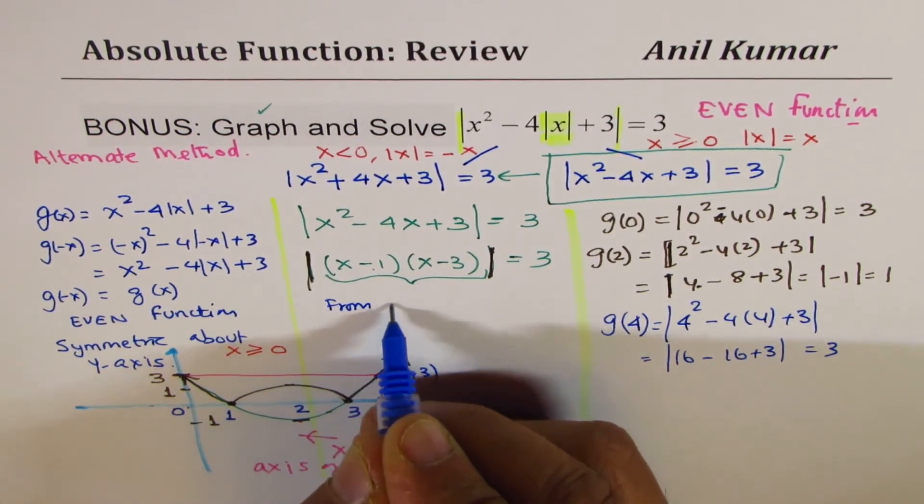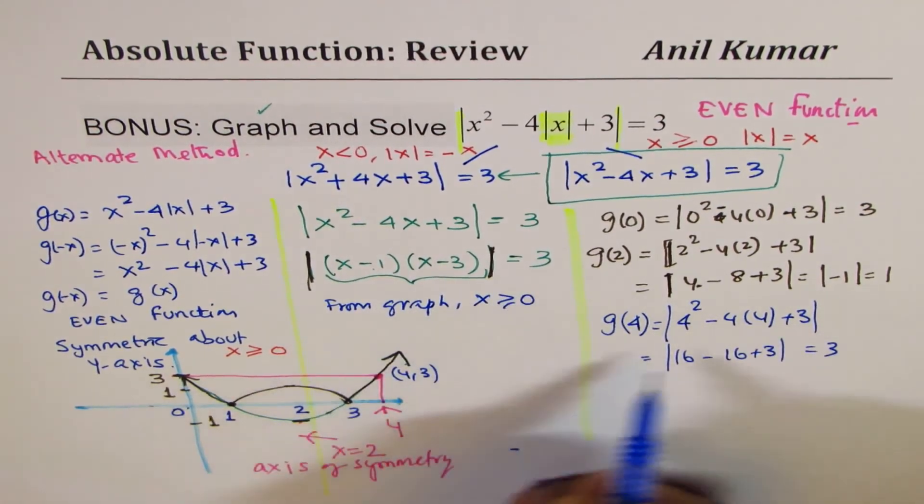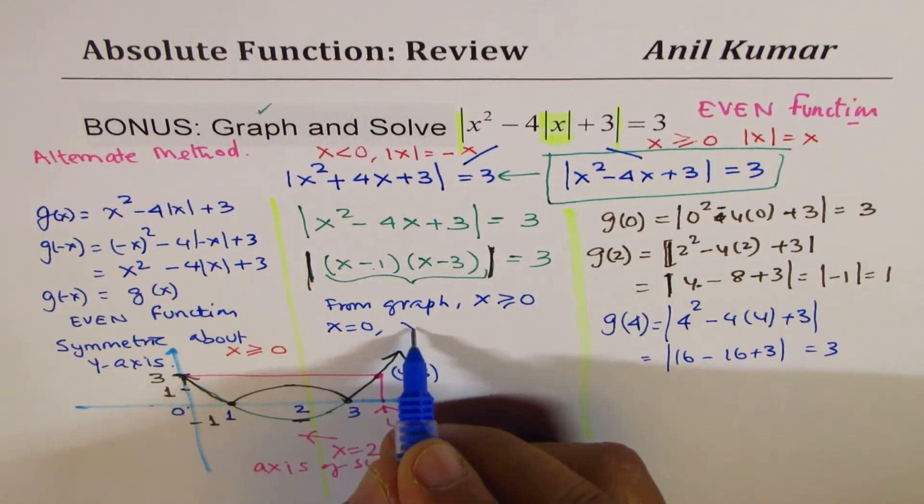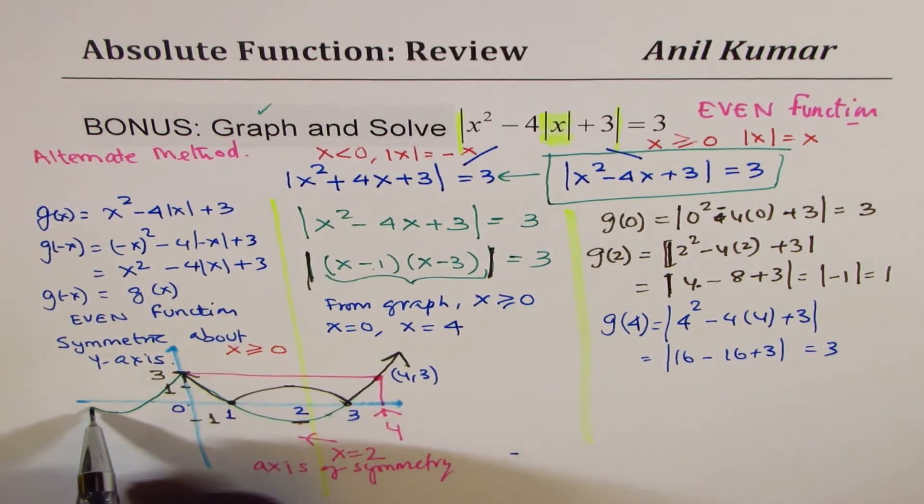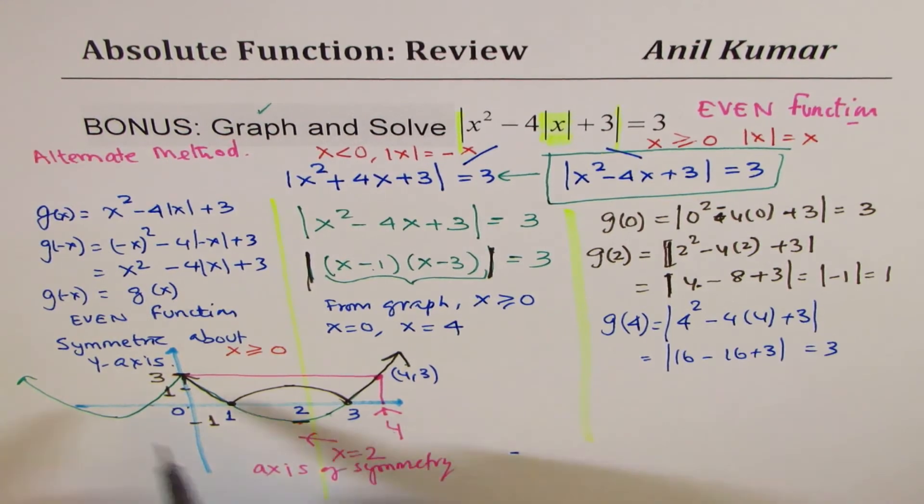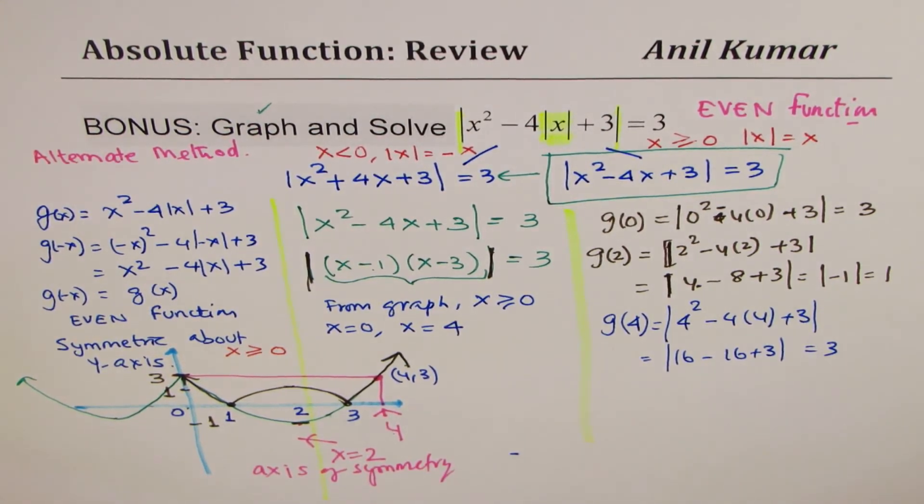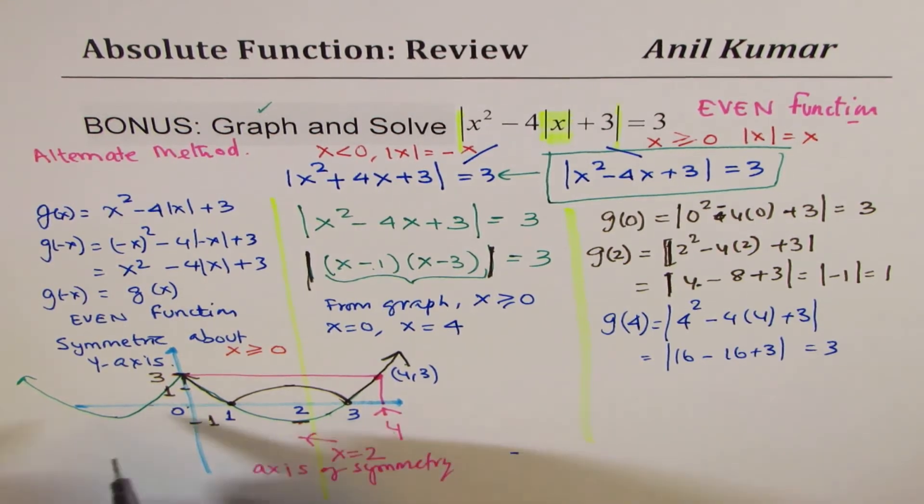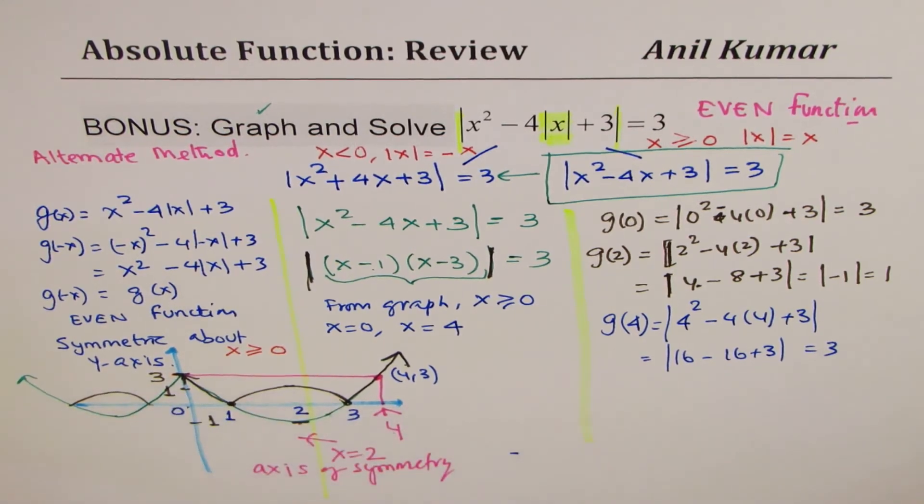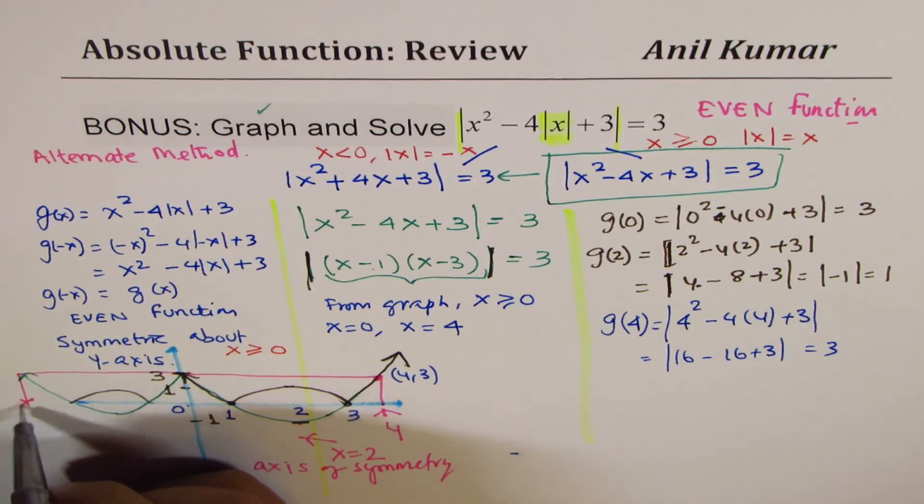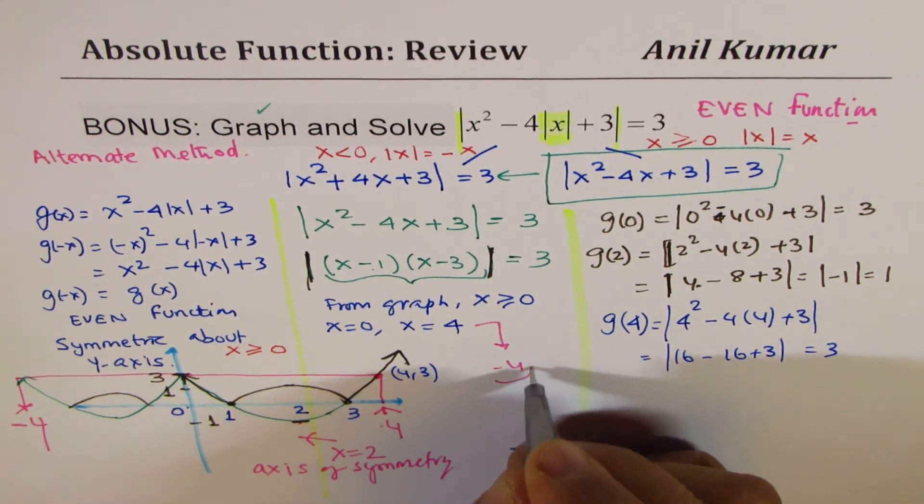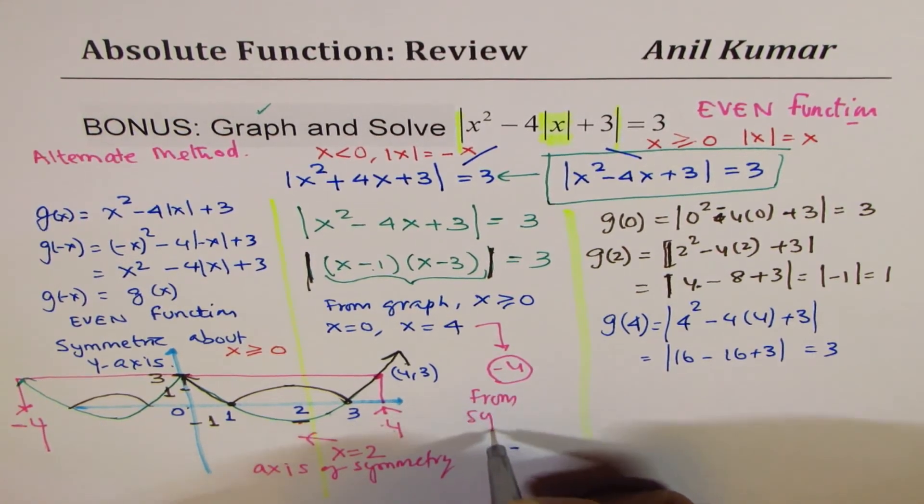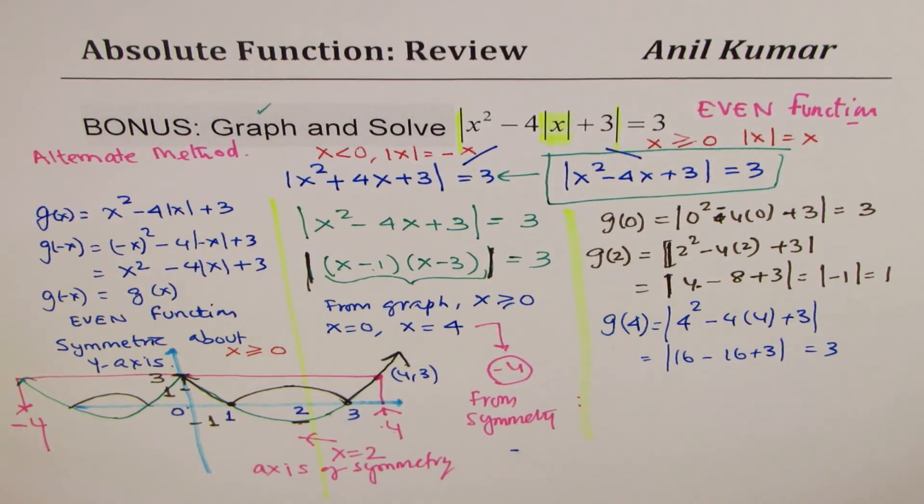So, from the graph, we can write, from graph, for x greater than or equal to 0, we get two solutions. One is x equals to 0, the other one is x equals to 4. Is it okay? What are the other solutions? Well, the other solutions are from the symmetry. I could have gone to this side, kind of like this. So, I could have got my solution as what? So, I'll reflect this part, does it make sense to you? And I'll extend this line, and the point where it will touch here will be minus 4, correct? So, from reflection, I get minus 4 also. This is from symmetry. Do you understand this strategy?